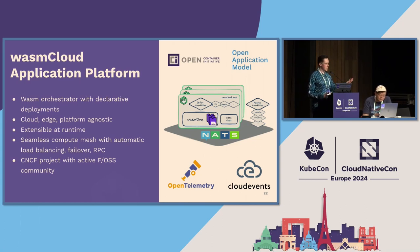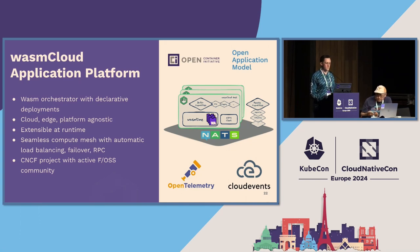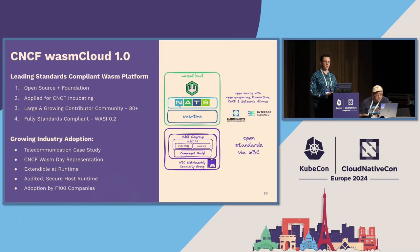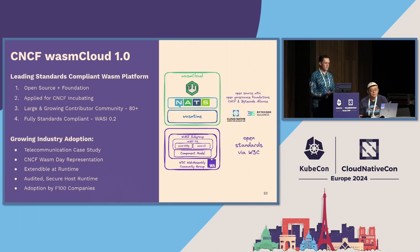WasmCloud comes with a set of standard interfaces but it's extensible at runtime. We use NATS — another CNCF project — as our networking layer, which gives automatic load balancing, failover, and RPC for your applications. We are approaching 1.0, which is really exciting, and we are soon to be incubating in the CNCF. WasmCloud is growing really well as a project with a growing contributor community. All of you folks looking to contribute to cloud-native projects — please check us out, everything is open source. We're getting a nice set of growing industry adoption, which you can see from the WasmCloud presentations from WASM Day yesterday on YouTube.